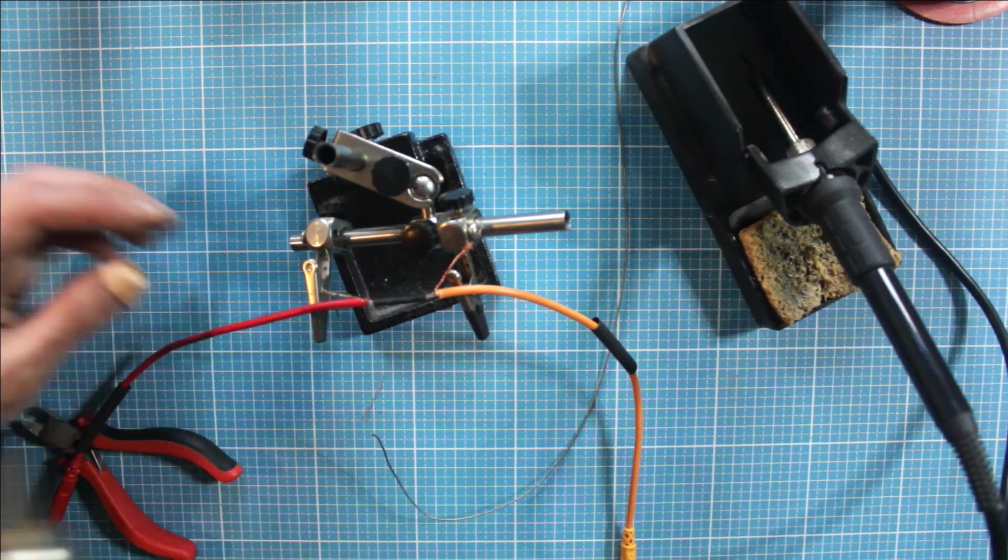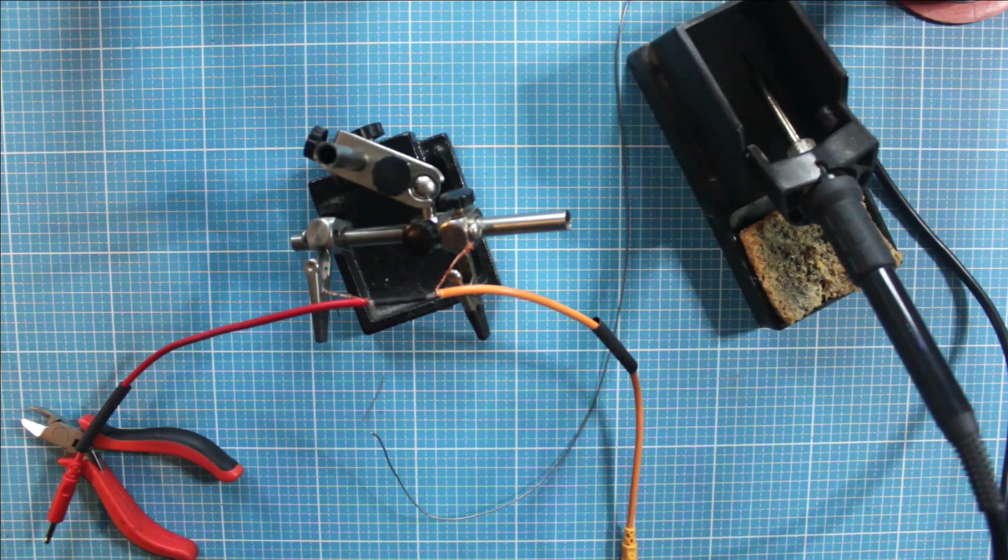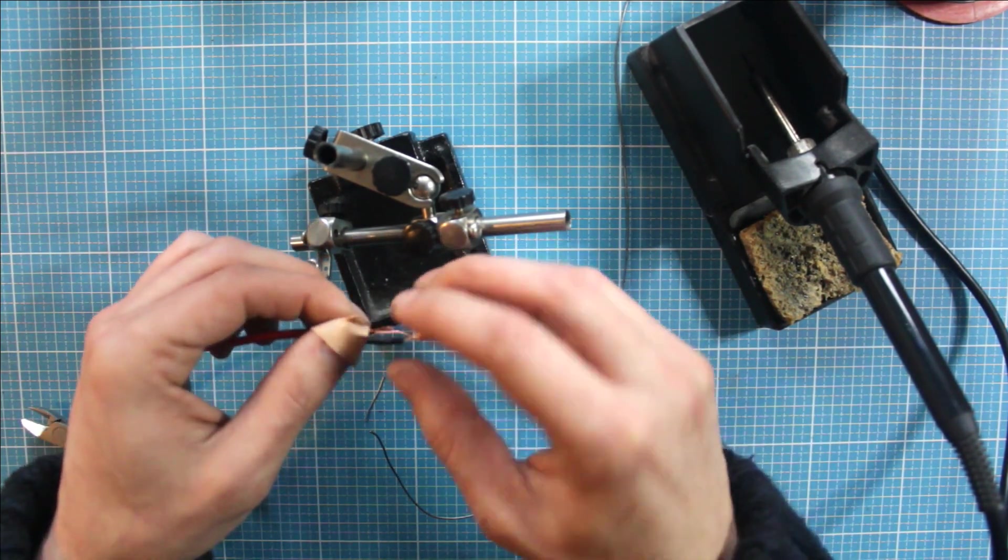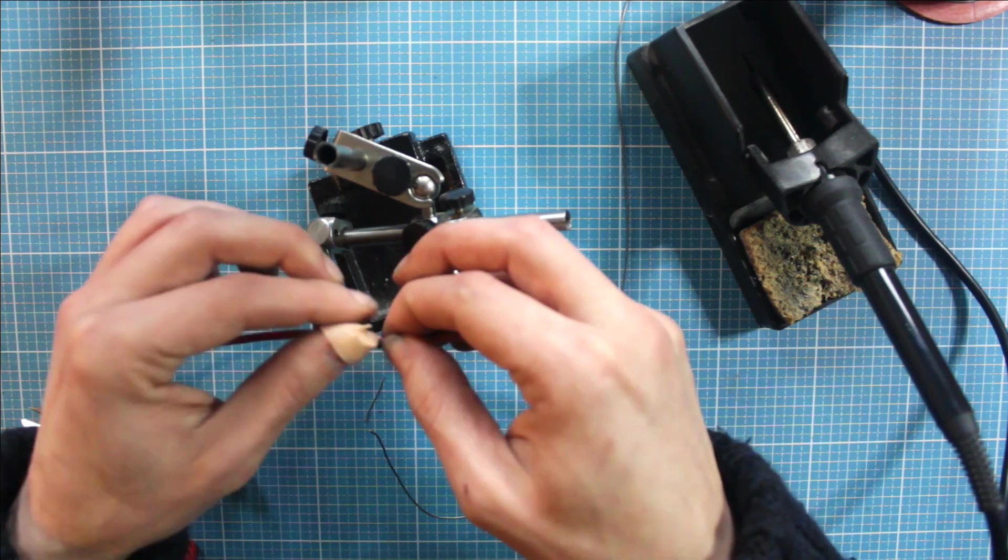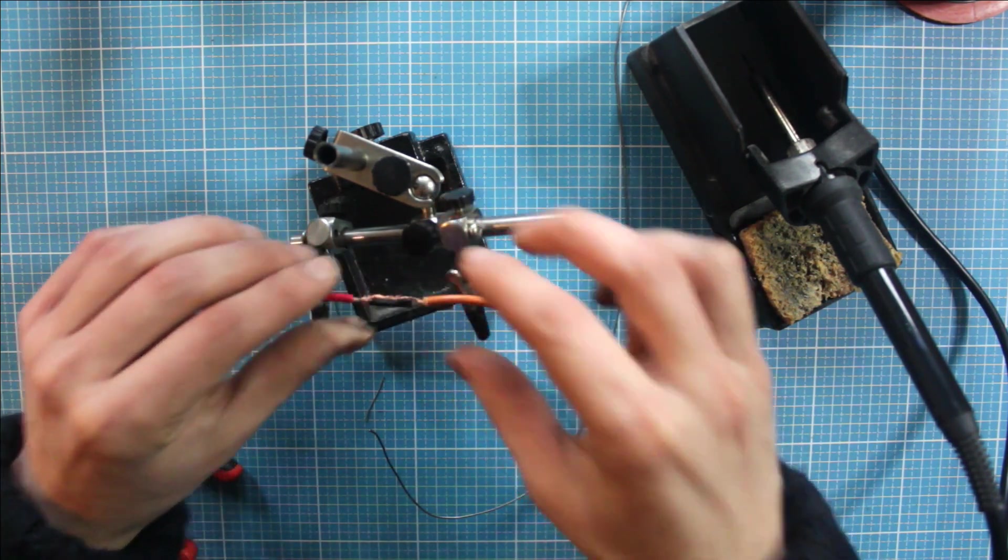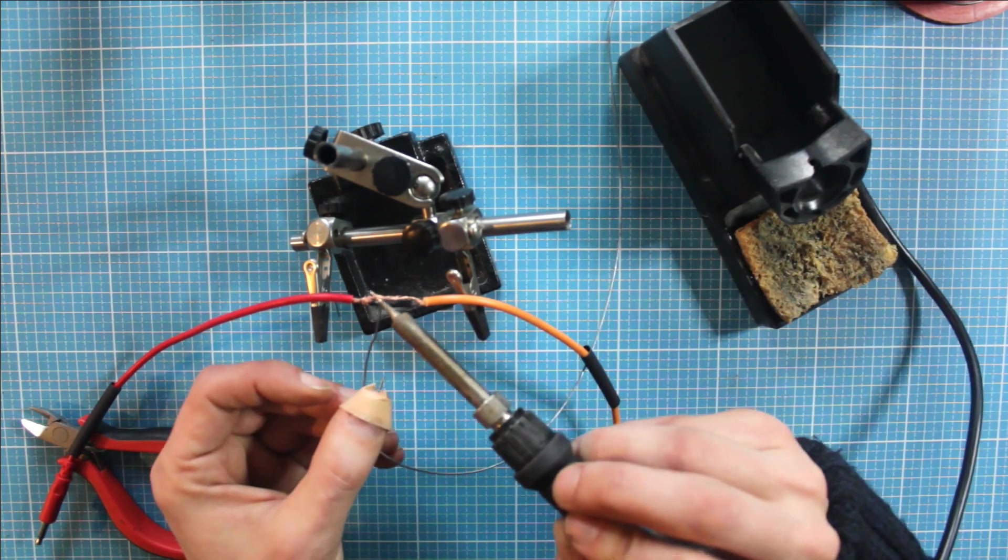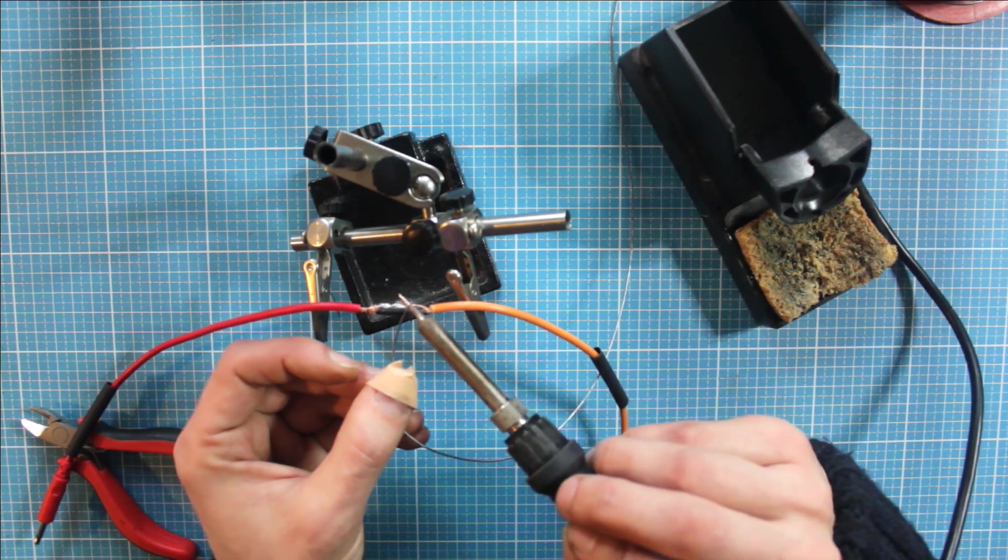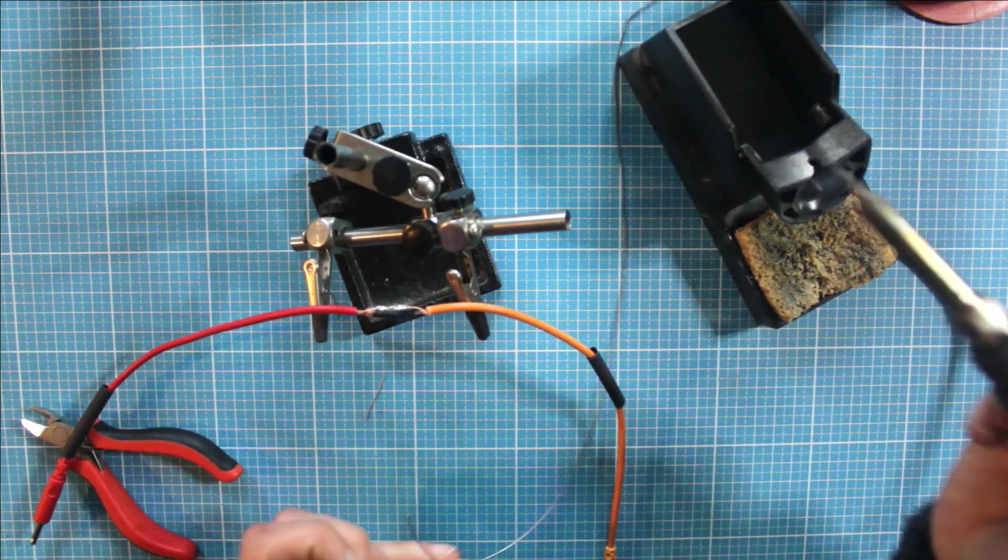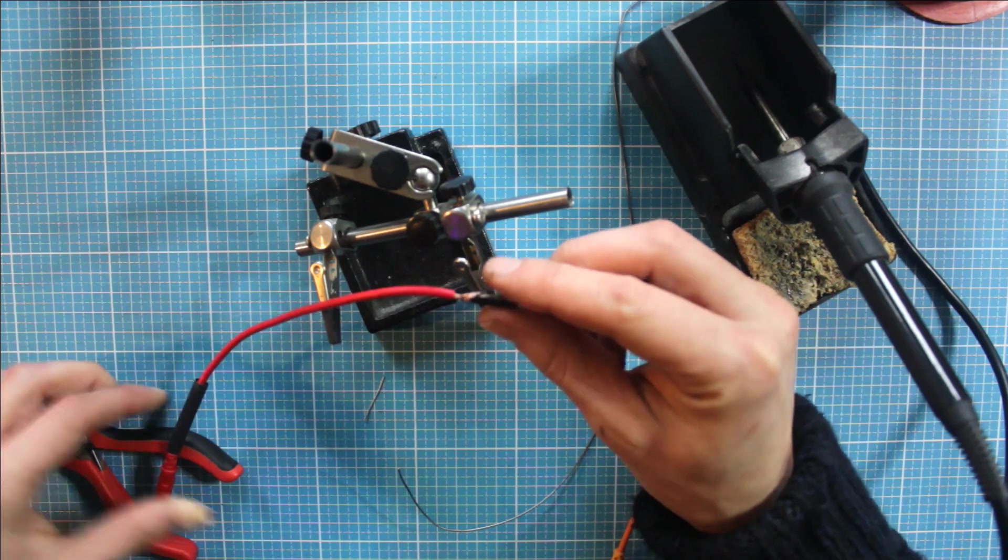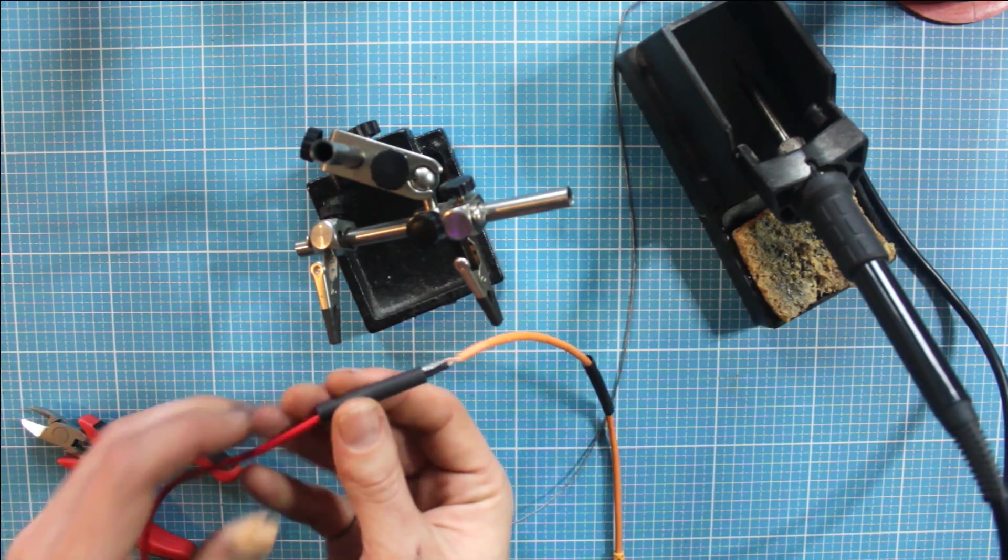Voila! And now solder these two ground wires. Like that. All right, looks perfect. Now bring back the heat shrink.